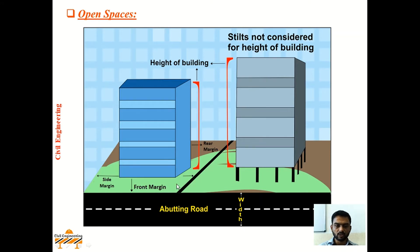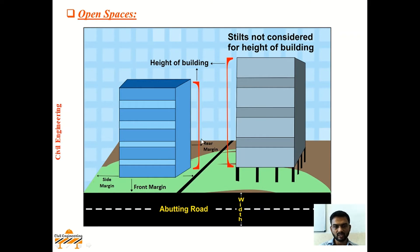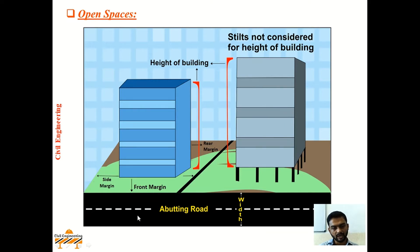Open space is nothing but the line up to which the plinth of the building can extend, maybe on the front side, side of the building, or at the rear side of the building. Open spaces depend upon the height of the building and abutting road. The front margin may depend upon the abutting road — whether it is a village road, district road, state highway, or national highway — and depending on that, front open space may vary.